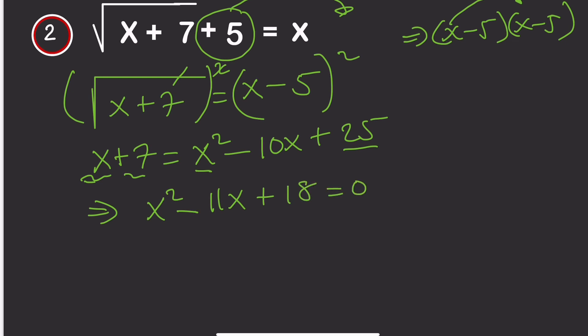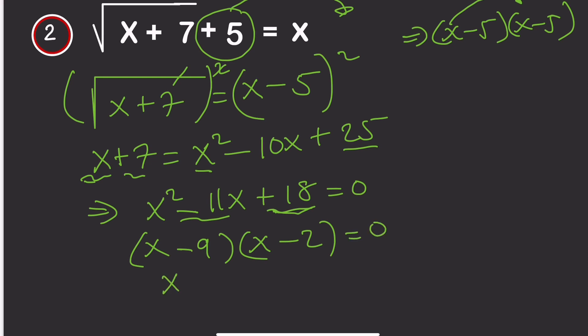So we have x squared minus 11x plus 18 equals 0. To solve this, we factorize. We need two numbers that multiply to give 18 and add to give minus 11. Those two numbers are minus 9 and minus 2, giving us x equals 9 or x equals 2.